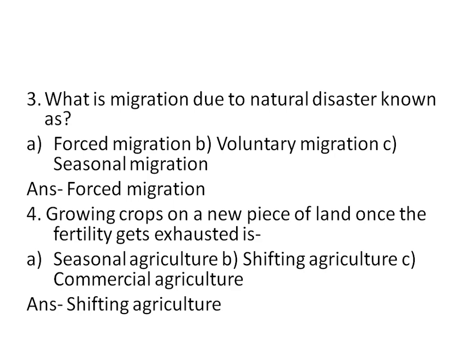Number 4 is: growing crops on a new piece of land once the fertility gets exhausted is? Options are seasonal agriculture, shifting agriculture, and commercial agriculture. The correct option is shifting agriculture.